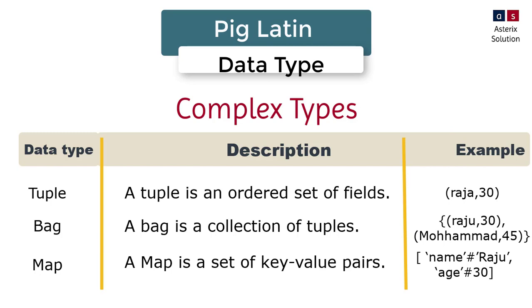Then you have a map. A map is basically a combination of key-value pair. It's separated by a hash, hashtag. The hashtag is the separator between your map key-value pairs. Obviously, Pig also gives support for null. When you don't have any value, it will be given as null.